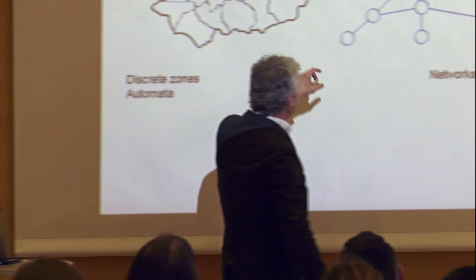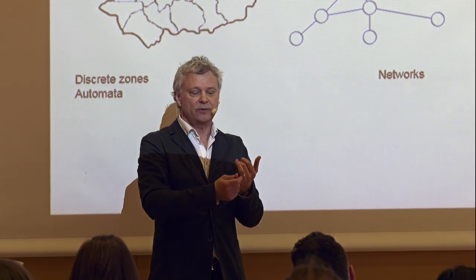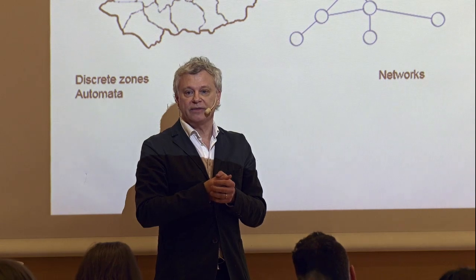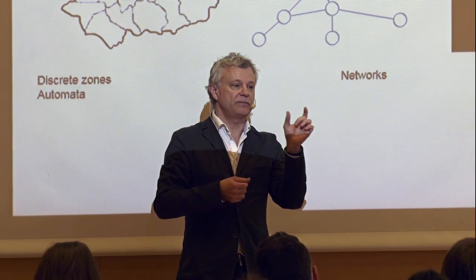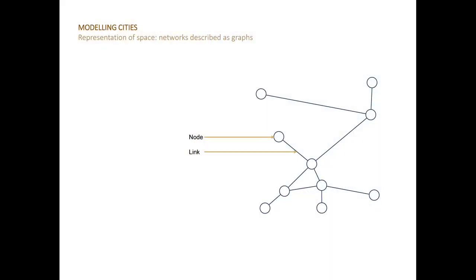Networks, in a sense, are all about relations. You find networks everywhere these days — social networks, the internet, cities. It's a very powerful and simple way of describing things. The essence is to address the relation between things rather than the things in themselves. Networks are represented using particular languages, often described as graphs — an extraordinary language consisting of just two words: links and nodes. There's nothing else — links and nodes.